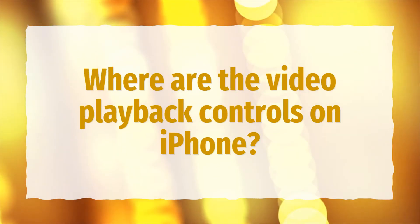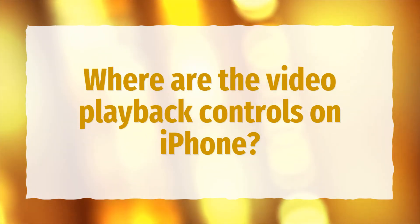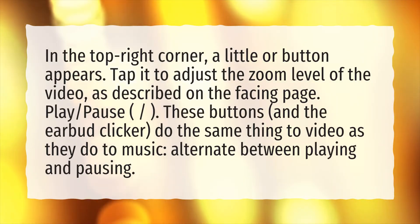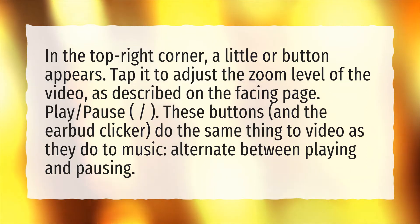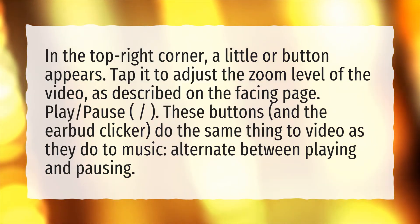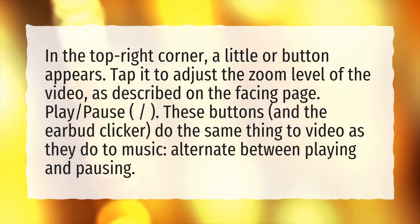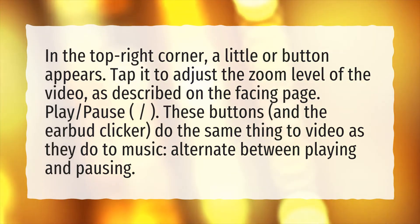Where are the video playback controls on iPhone? In the top right corner, a little button appears. Tap it to adjust the zoom level of the video, as described on the facing page. Play, pause — these buttons and the earbud clicker do the same thing to video as they do to music. Alternate between playing and pausing.